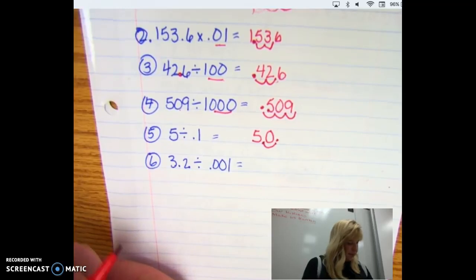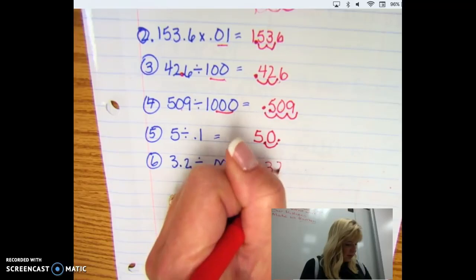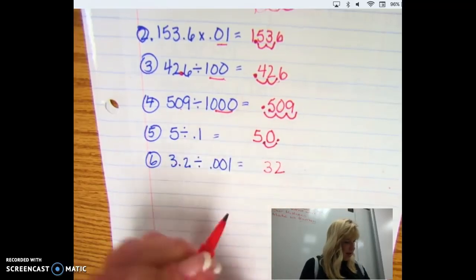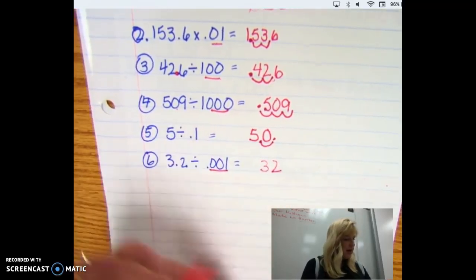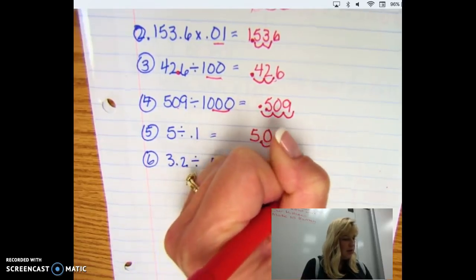Number six, 3.2. So I'm going to write a three and a two down. And there are three places right here. I started right here and I moved to the right. One, two, three.